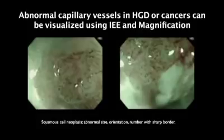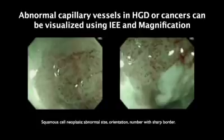Image-enhanced endoscopy enhances the visualization of the abnormal capillary vessels in high-grade dysplasia and cancers. The abnormal size, orientation, and number of surface capillaries with distinct borders are characteristics of squamous cell neoplasia.